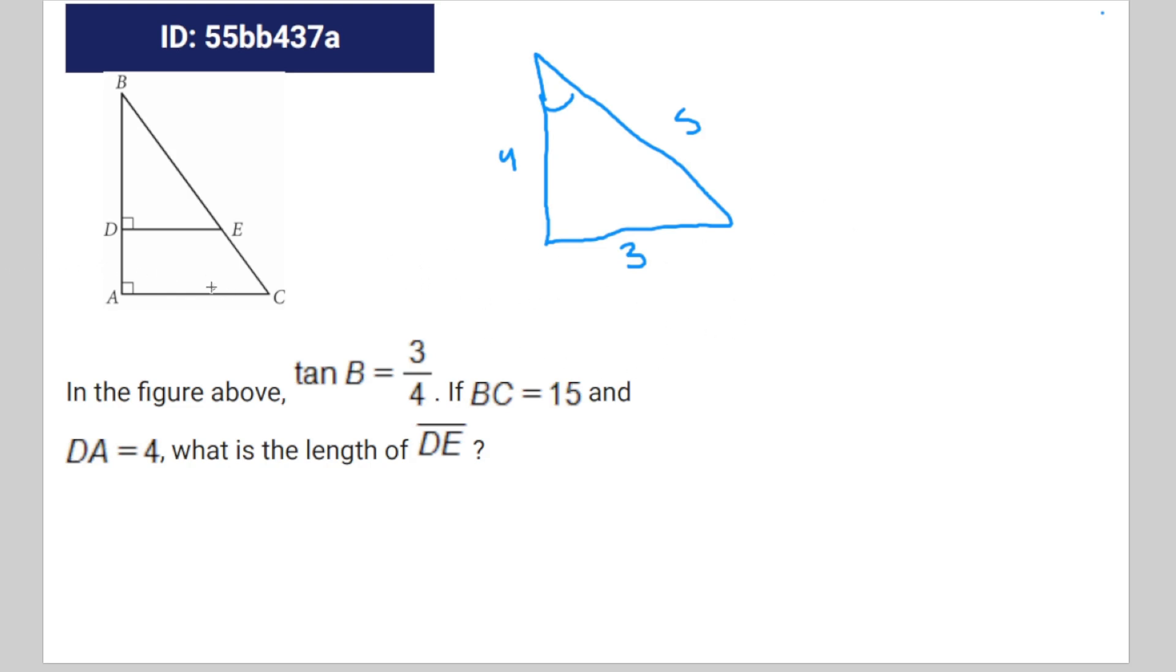To find the side lengths of AC, you just take the side length of BC which is 15 and times it by the ratio which is 3 over 5. So 3 over 5 times 15 is equal to 9. You can do the same thing with BA: 4 over 5 times 15 is equal to 12.